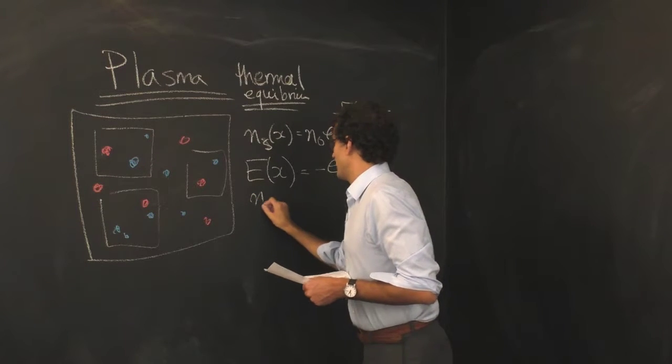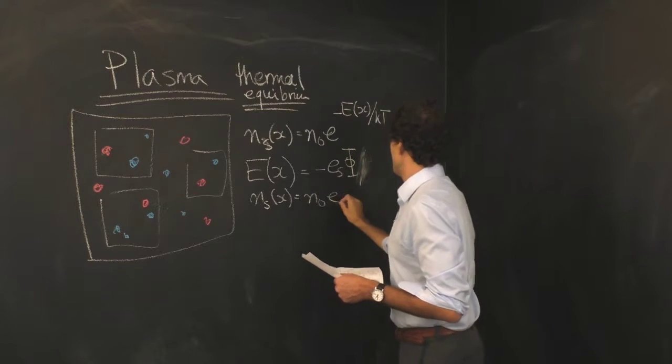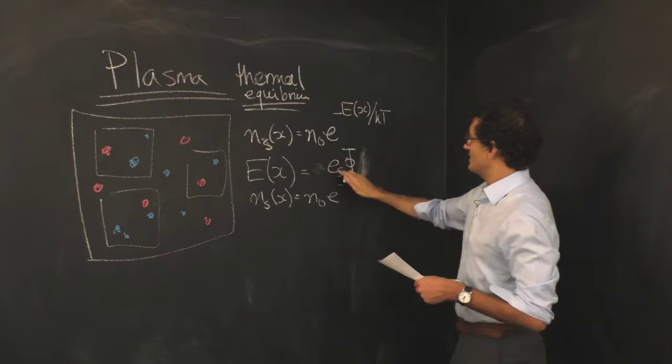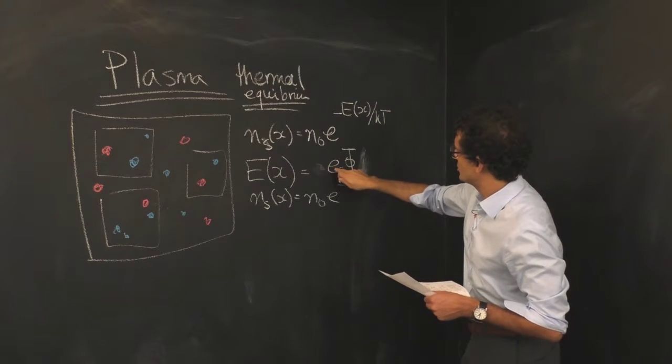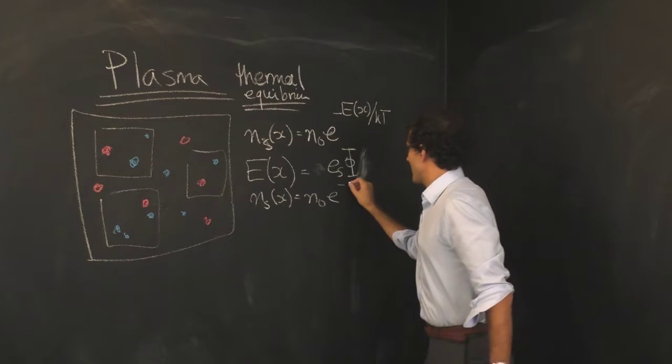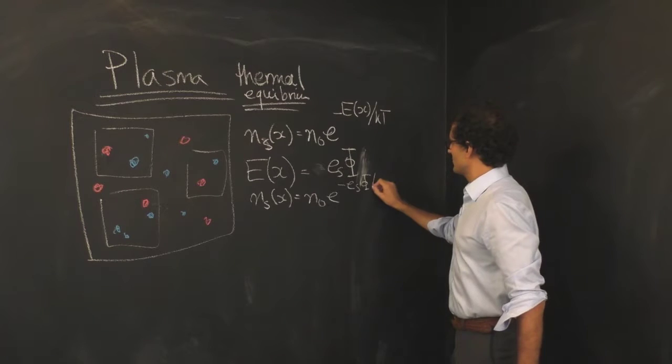Or rather, sorry, the energy here is the positive, it's the charge of the species times the potential. And then the negative of that energy is e to the negative qs, or rather negative qs times the potential divided by kT.